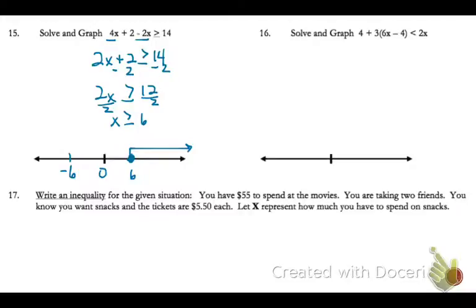Number 16, I see that I have a parenthesis. So I'm going to bring down my 4 plus, and then 3 times 6 is 18x. 3 times negative 4 is negative 12.